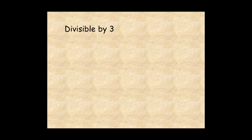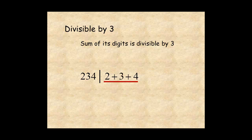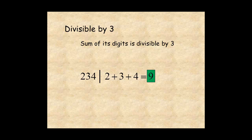A number is divisible by 3 if the sum of its digits is divisible by 3. For example, the number 234: the sum of its digits, 2 plus 3 plus 4, is equal to 9. Since 9 is divisible by 3, the number 234 is divisible by 3. And you can see, 234 divided by 3 is 78 with no remainder.